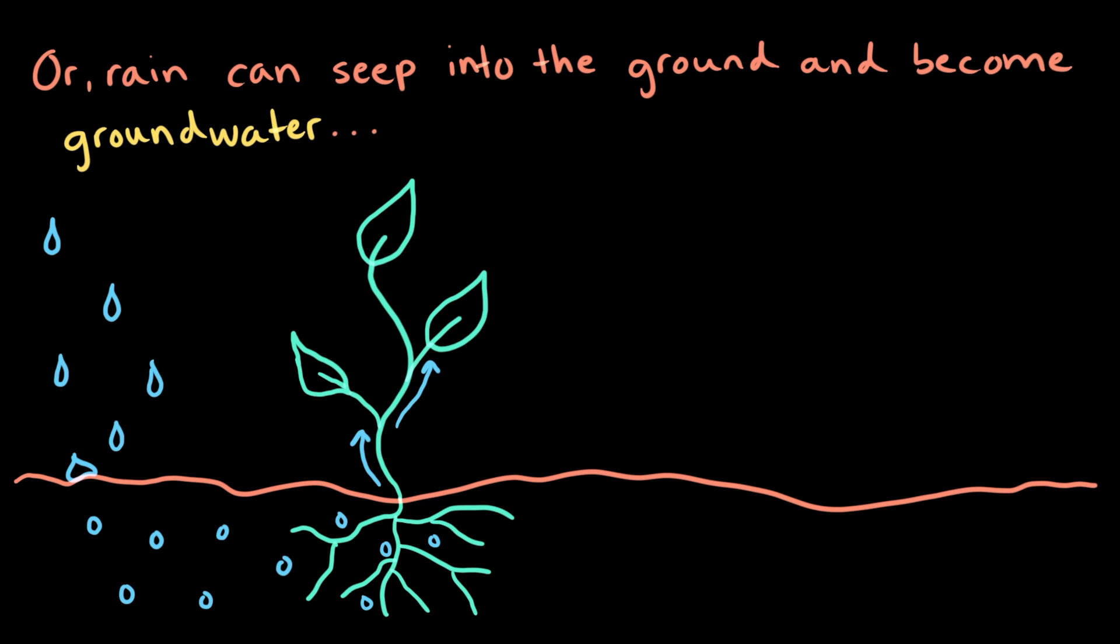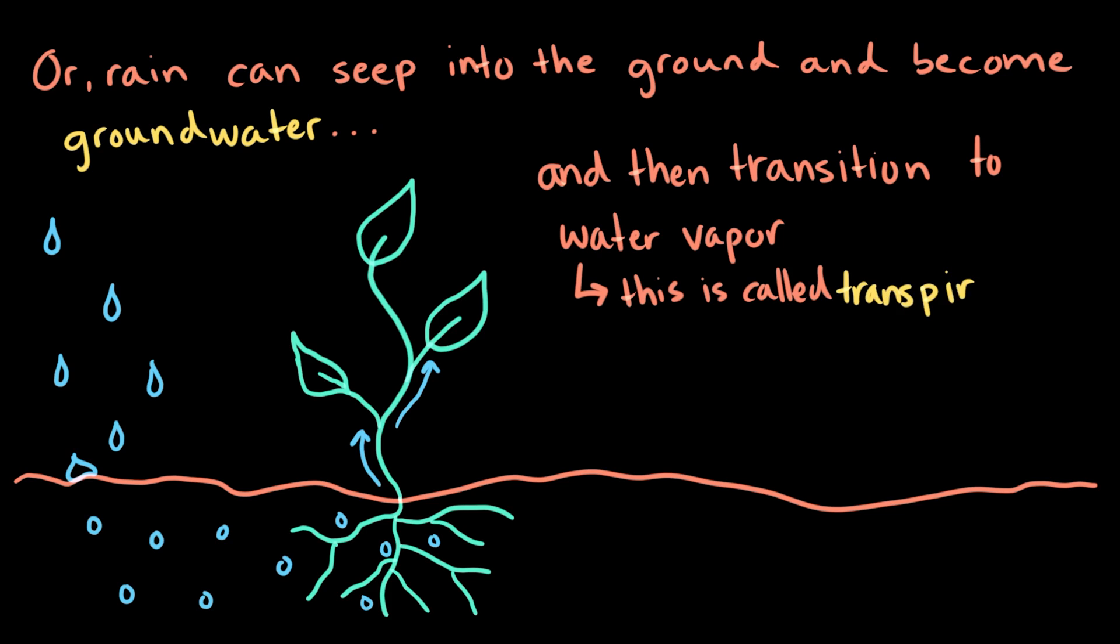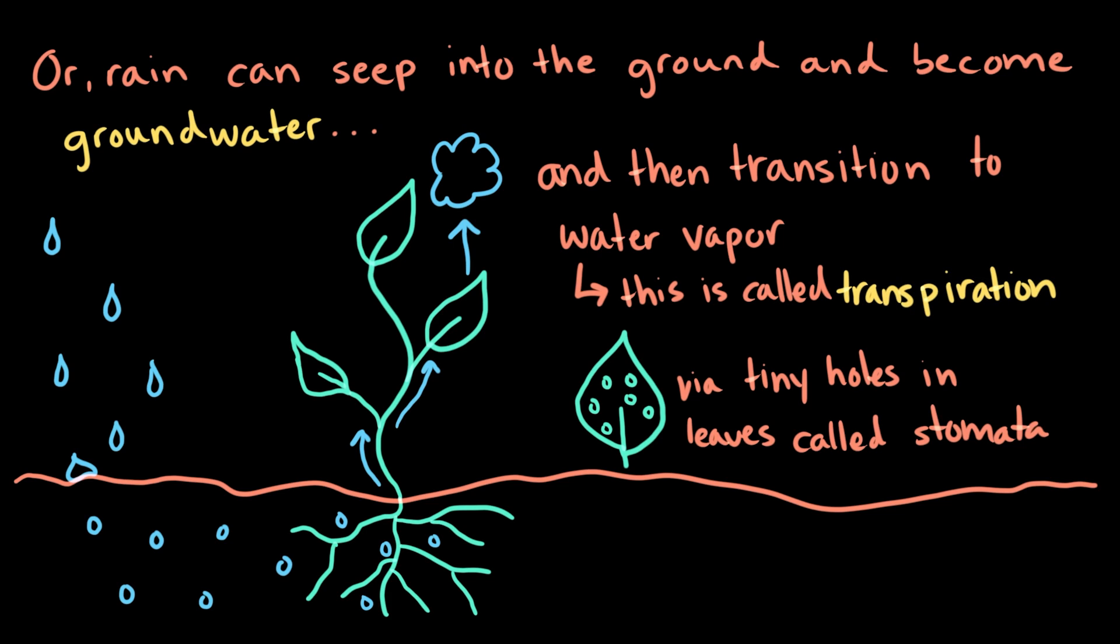Or, rain can seep into the ground and become groundwater, where it's then absorbed by plant roots. In turn, through transpiration, the water absorbed by the plants can transition to water vapor and leave directly through the leaves via tiny holes called stomata and return to the atmosphere.